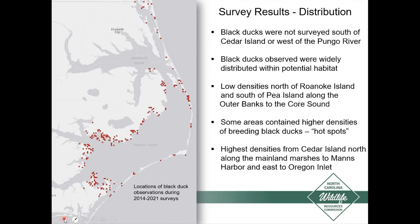After completing the 2014 and 2015 surveys, it became clear we probably didn't need to survey south of a line around Cedar Island or west of the Pungo River. Looking at the distribution of observations from 2014 through 2021, north of Roanoke Island up to the state line we saw very low densities of breeding black ducks, and south of Pea Island down through Core Sound also had low densities. Where we did see a lot of ducks was around Cedar Island, north along the Pamlico Sound through Hyde and Dare Counties up to about Mann's Harbor, and east and south down to Pea Island — these are the highest quality breeding habitats in the state.